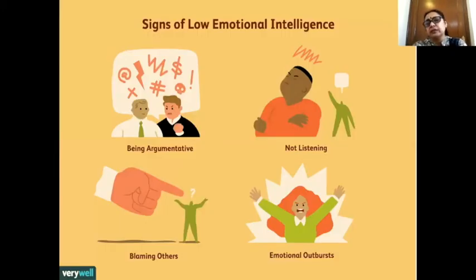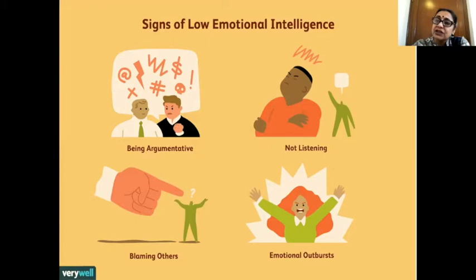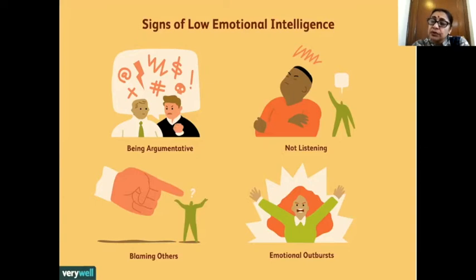Signs of low emotional intelligence include being unnecessarily argumentative, majoring on minor issues, getting into arguments for the sake of it, not listening properly — only hearing. Blaming others and always looking to find fault in the other person. Emotional outbursts and tantrums could also be a result of anxiety, showing that you're not dealing with that anxiety in the best possible manner.